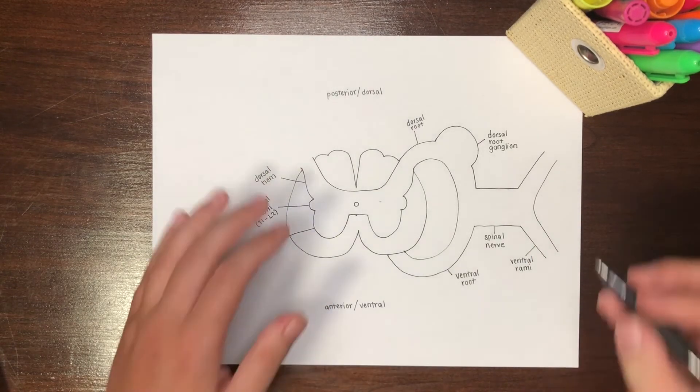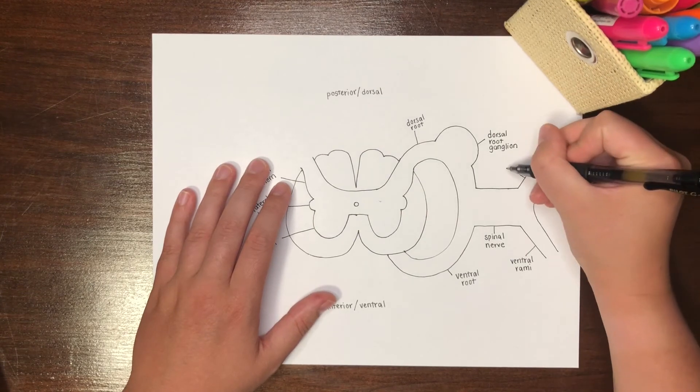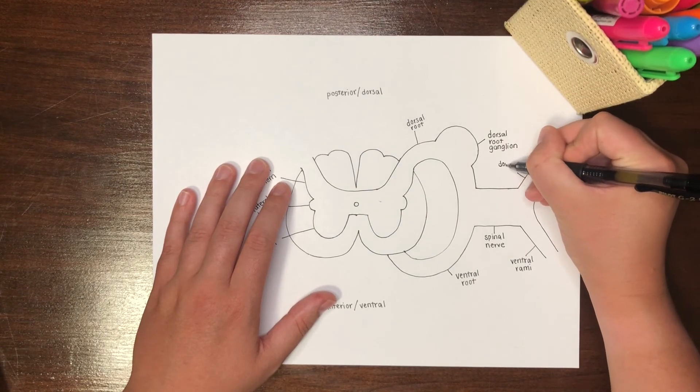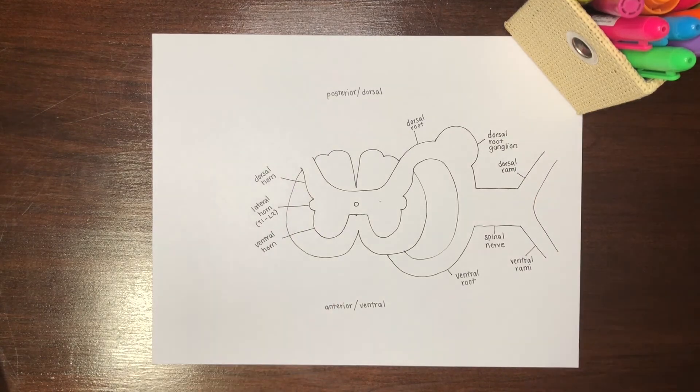These same nerve structures exist on the opposite side as well. You may draw these out on your own if you wish, but I will fast forward to a completed drawing.